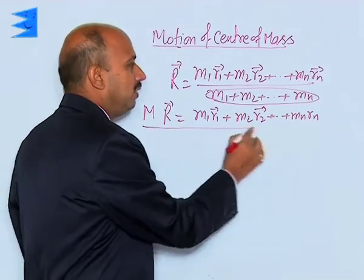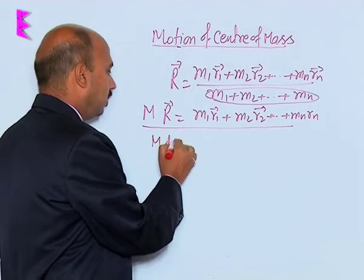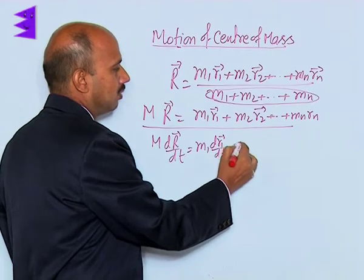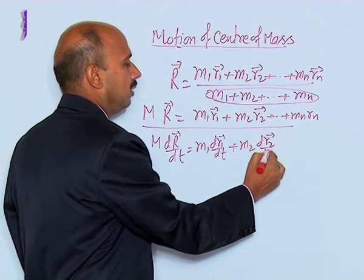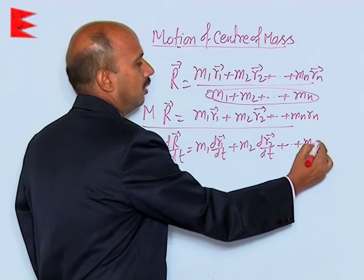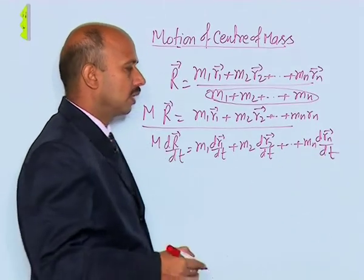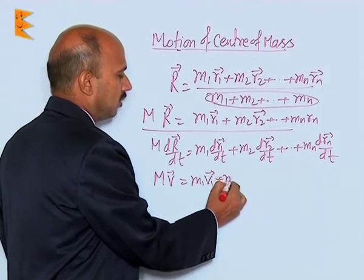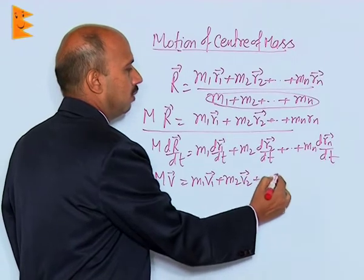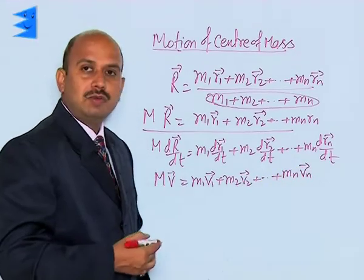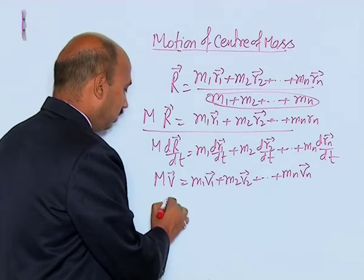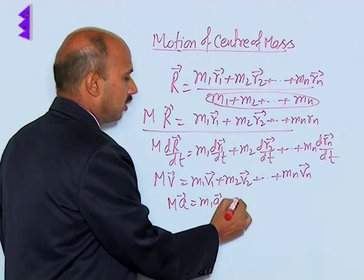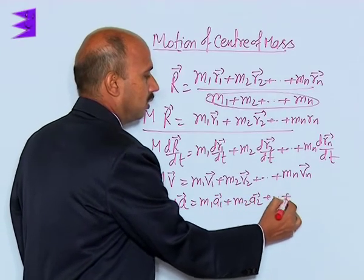Now, if you differentiate the position formula, you get M·(dR/dt) = m1·(dR1/dt) + m2·(dR2/dt) + ... + mN·(dRN/dt). This gives M·V = m1V1 + m2V2 + ... + mNVN. Similarly, if you differentiate again, you get M·A = m1A1 + m2A2 + ... + mNAN.